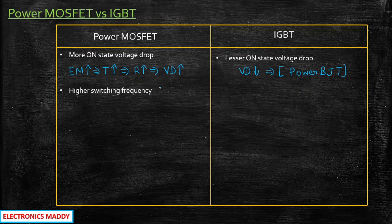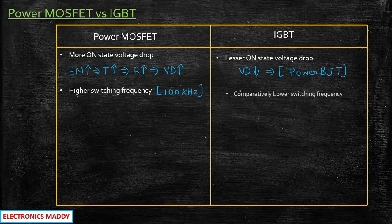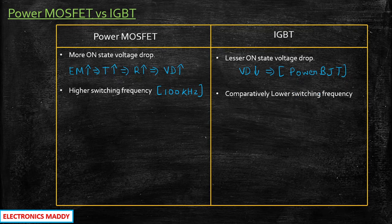In power MOSFET, it is suitable for higher switching frequency — specifically up to 100 kilohertz. Whereas IGBT is also suitable for higher switching frequency, but when you compare it with power MOSFET, the switching frequency will be very low. The typical range for IGBT is 20 kilohertz, so it is suitable for comparatively lower switching frequency.